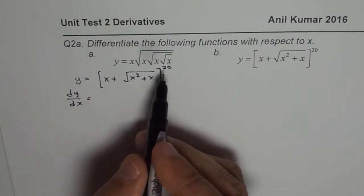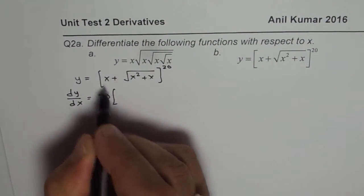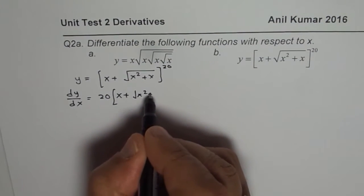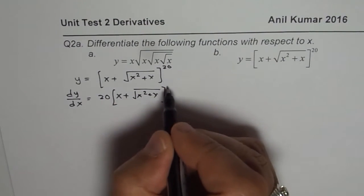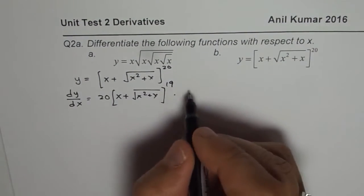When you do dy/dx, we apply the power rule first. So it becomes 20 times x plus square root of x squared plus x to the power of 20 minus 1, that is 19, times derivative of inside function.